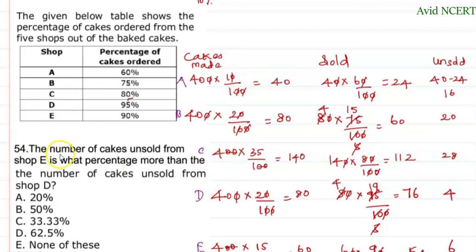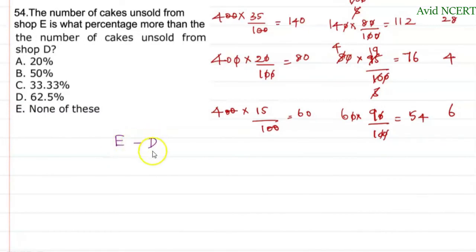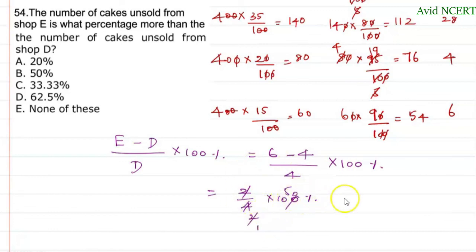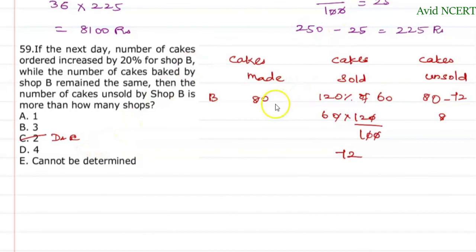Question 54 from SVIPO 2020: The number of cakes unsold from shop E is what percentage more than the number of cakes unsold from shop D? Shop E unsold = 6, shop D unsold = 4. Formula: (E − D) / D × 100% = (6 − 4) / 4 × 100% = 2/4 × 100% = 50%. So shop E has 50% more unsold cakes than shop D.